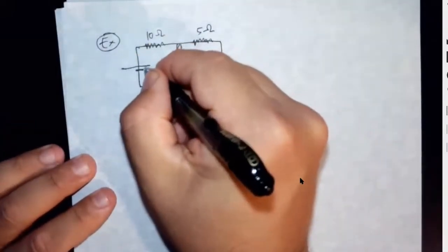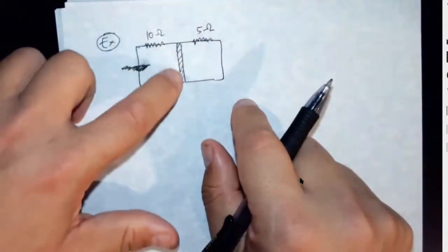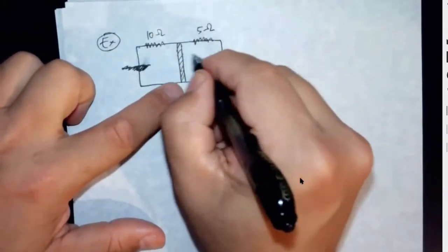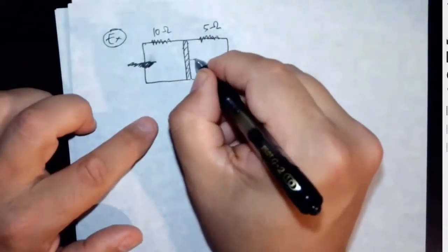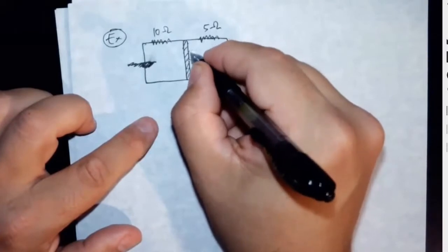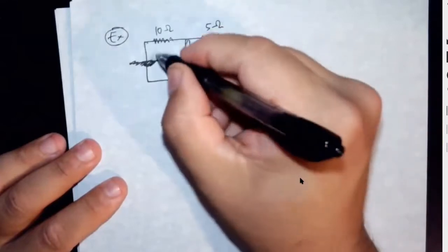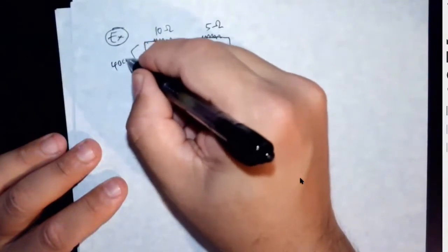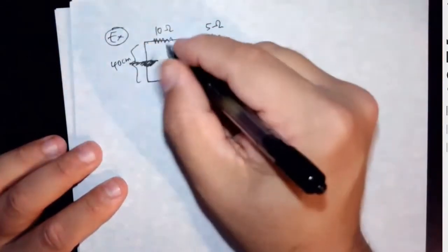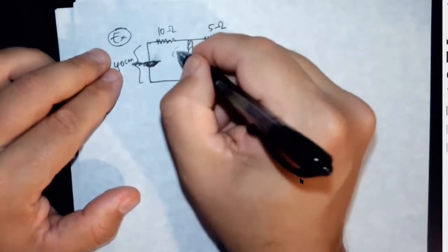So what we're going to do is not have a battery here. Let's say it's a resistor of 10 ohms, and then this rod is a slidable rod. You can slide along the rails of this circuit. It's going to the right at five meters per second. This distance here is 40 centimeters, and there is a magnetic field in this whole region that is into the board.